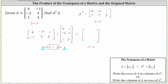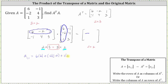Let's begin by determining the element in row one, column one of the product. To do this, we multiply row one in the first matrix and column one of the second matrix. The element a sub one comma one is equal to six times six plus negative two times negative two plus one times one, which gives us 36 plus four plus one, which is 41.